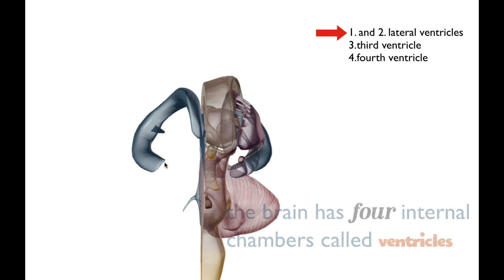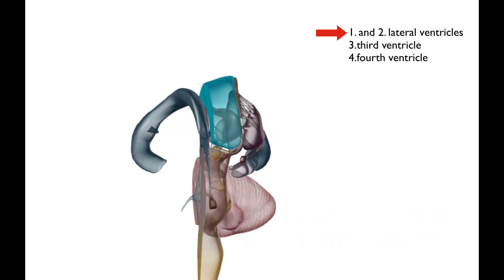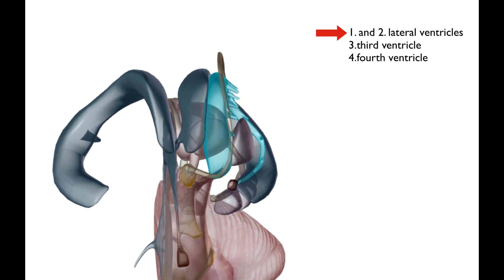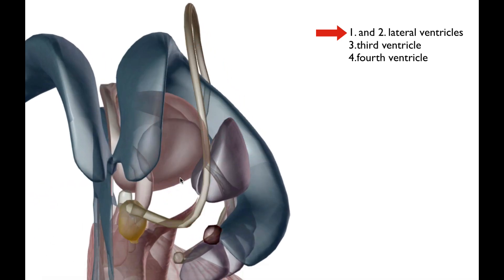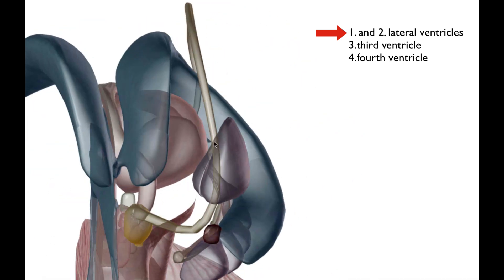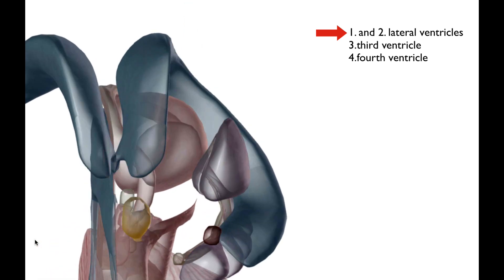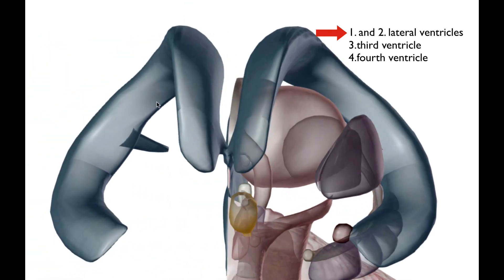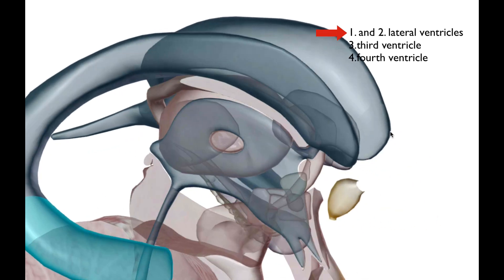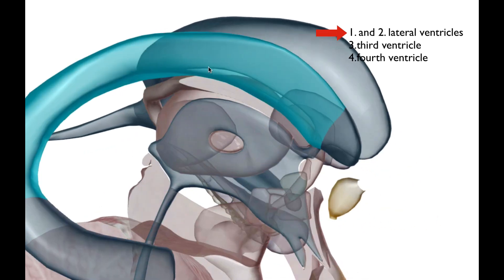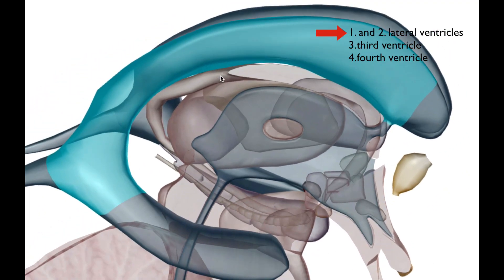Let's get rid of that nervous tissue too so you can get a better view as to where the ventricle is located. The ventricles are called lateral ventricles because they are on the lateral-most aspect.